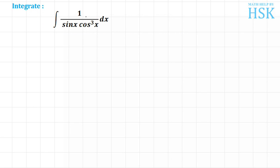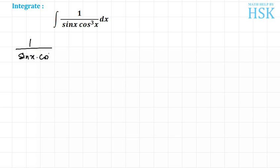In this question we have to integrate 1 upon sin x into cos cube x. This is a trigonometric term, so first of all we are going to simplify this expression. The trick here is a very tricky simplification.